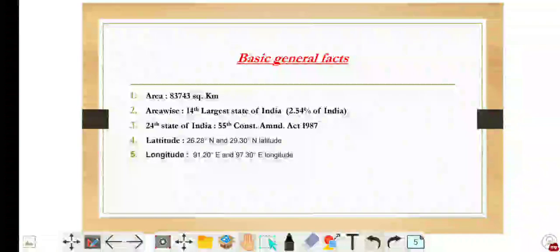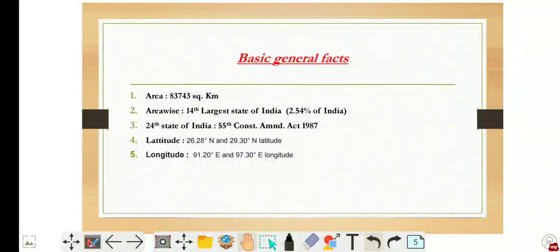Now coming to the latitude and longitude. The latitude of Arunachal is 26 degrees 28 minutes North and 29 degrees 30 minutes North latitude. The longitude is 91 degrees 20 minutes East and 97 degrees 30 minutes East longitude.